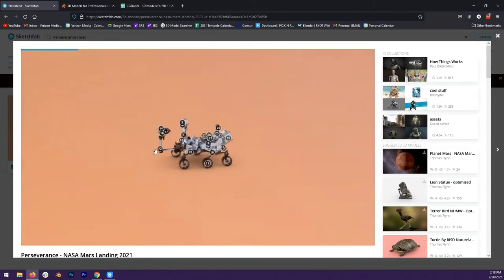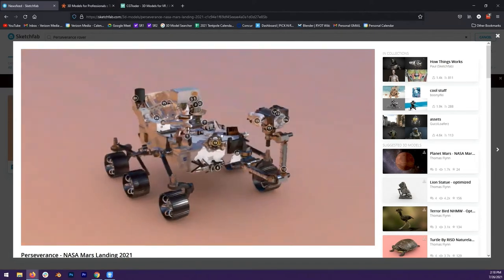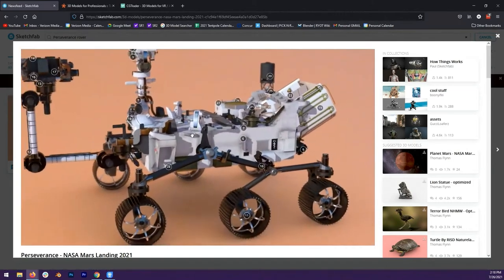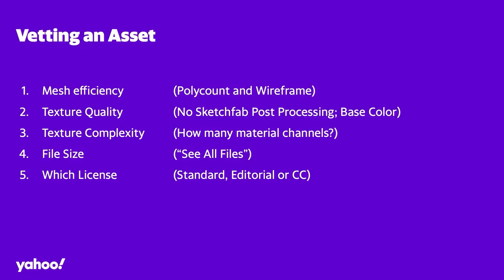Opening a model page, you see it loads a 3D viewer instead of just a screenshot, so you can look at it from a variety of angles. I always tell people to pause and vet the asset — especially if you're spending money, but even when you're not. We're going to vet an asset in five ways: mesh efficiency, texture quality, texture complexity, file size, and license.